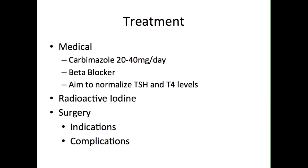Surgery involves a subtotal thyroidectomy and is mainly indicated if there is failure of medical treatment, but can also be considered if there is intolerance to medical treatment or if the patient has a large goiter. Complications of surgery include bleeding, which can potentially cause obstruction of the airway. Another complication is thyroid crisis — an acute thyrotoxicosis presenting with fast atrial fibrillation, hyperthermia, and pulmonary oedema. Other complications include hypocalcaemia due to removal of the adjacent parathyroid glands, hoarseness of the voice due to damage to the recurrent laryngeal nerve, hypothyroidism, and recurrent hyperthyroidism.